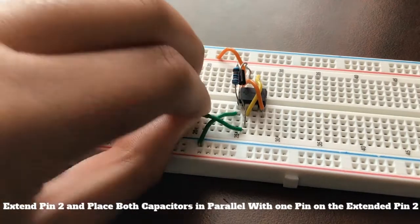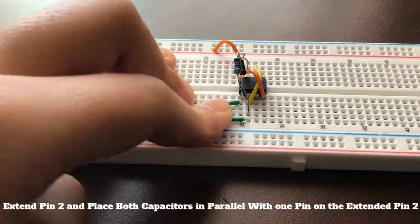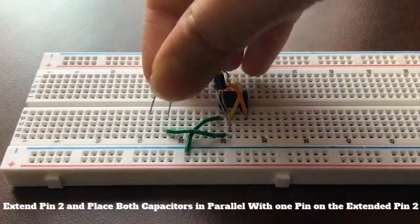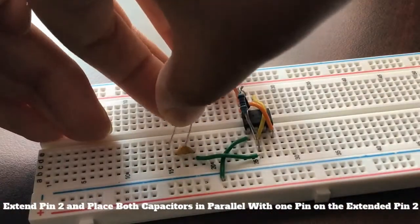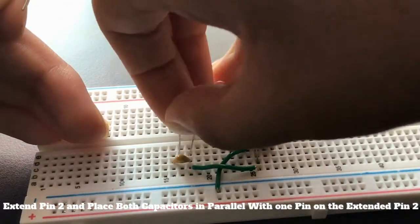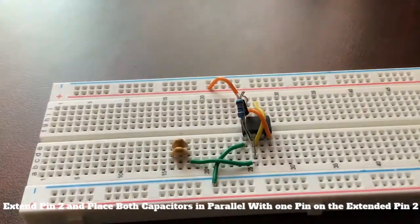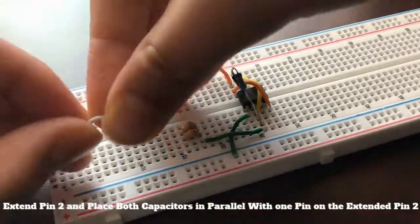Then extend pin two of the IC. Take both ceramic capacitors and connect them in parallel on that extended rail, just like you see in the video. Connect the other side of the capacitors to ground.